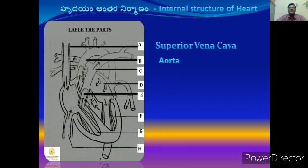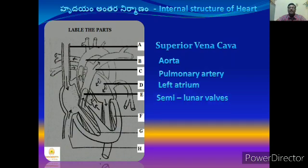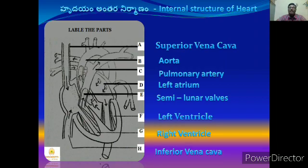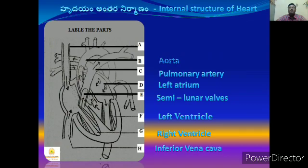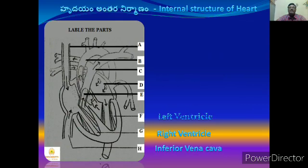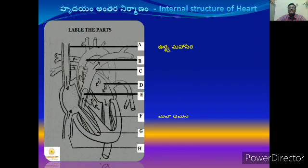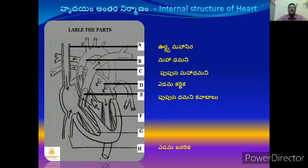This is the superior part of the pulmonary artery, left atrium, semilunar valves, left ventricle, right ventricle, and the inferior part of the pulmonary artery.